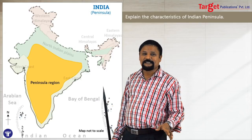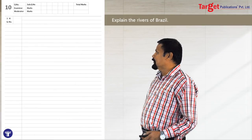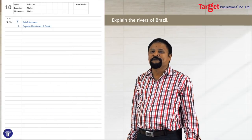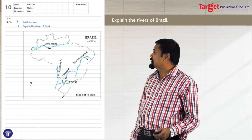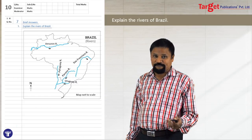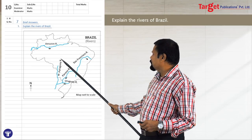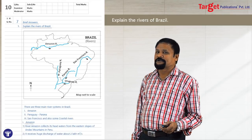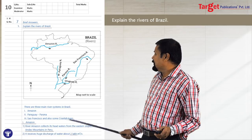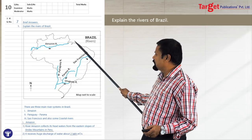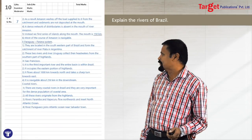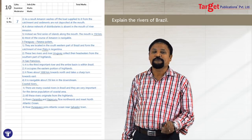Now let's see how to present the stencil map with a model answer. This is how your answer sheet is going to be: you will write question number seven, then write brief answers with the heading. This question is an example about explaining the rivers of Brazil. You will draw the Brazil stencil with the help of your stencil, then you can mark a few important rivers like Amazon, Paraguay, Parana, Uruguay system, and São Francisco. Then you start writing your answer.